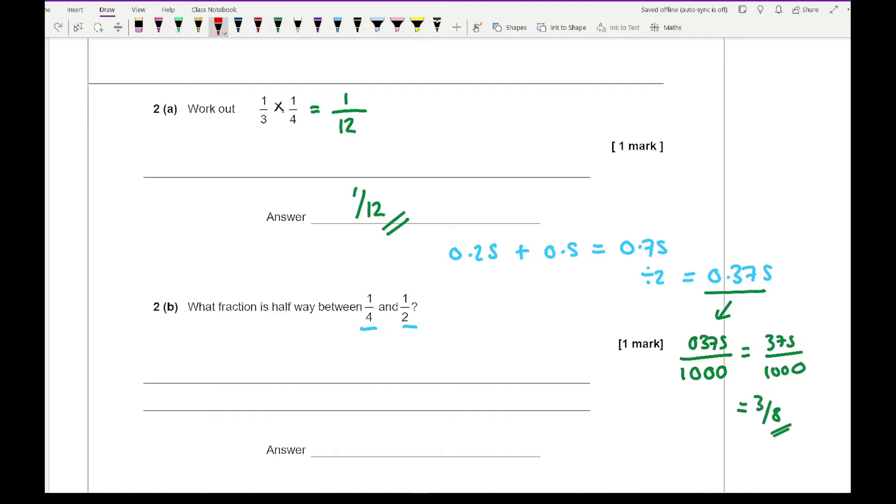Another way is working with fractions: add the two fractions, 1/4 plus 1/2, which is 1/4 plus 2/4, giving 3/4. Then divide by 2, so 3/4 divided by 2/1 becomes 3/4 multiplied by 1/2, giving 3/8. Alternatively you may already know that 0.375 equals 3/8. For one mark, this is quite under-marked for a non-calculator question.